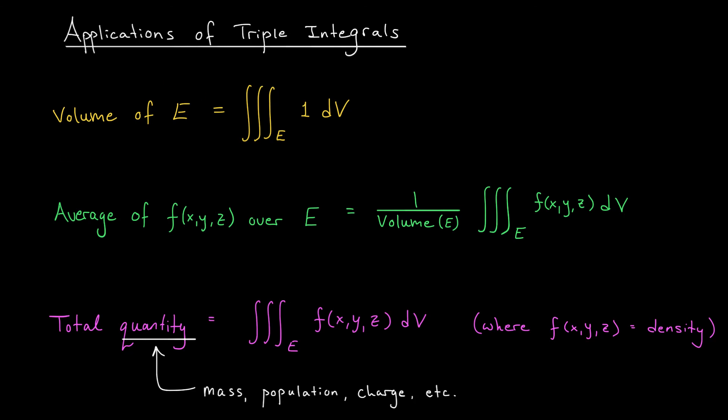Secondly, for double integrals, if you want to know the average value of a function F over some 2d region R, you can take the double integral of F and divide by the area of R. Something similar happens here. If you want to know the average of a 3 variable function over a 3d region E, take the triple integral of the function and divide by the volume of the region.